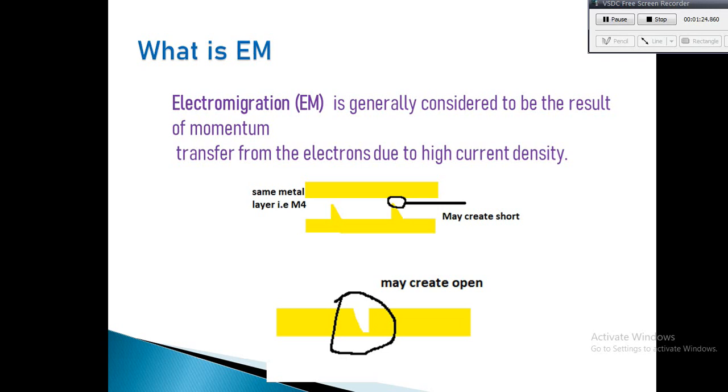While EM has been a problem since 90nm or even earlier, it gets worse at advanced nodes such as 20nm or below because wires are thinner and current densities become higher. As you scale wires down to more advanced process nodes, resistance increases and more current is needed. To get the performance you need from devices, you may need to increase current density, which creates EM issues.